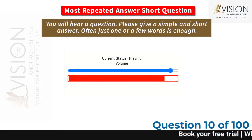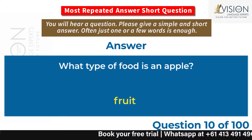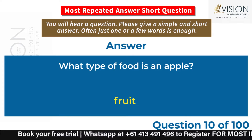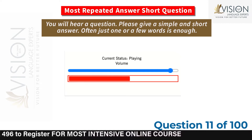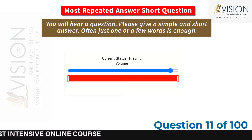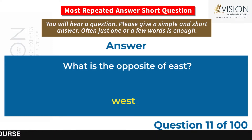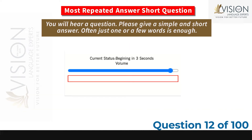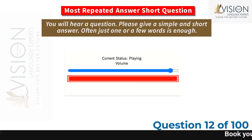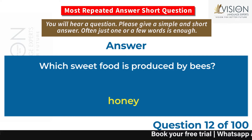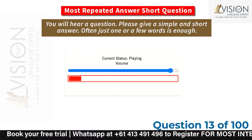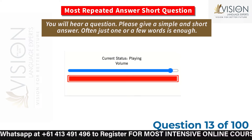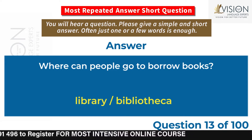What type of food is an apple? Fruit. What is the opposite of east? West. Which sweet food is produced by bees? Honey. Where can people go to borrow books? Library, bibliotheca.